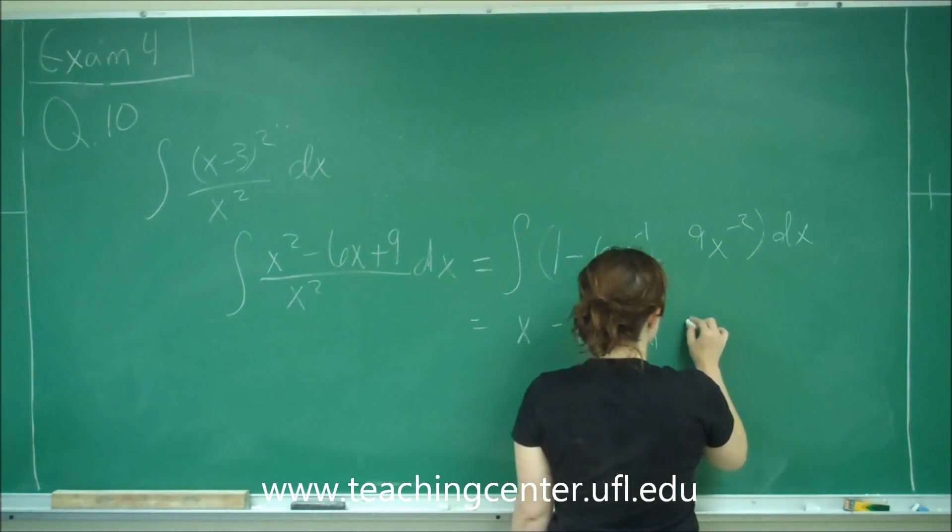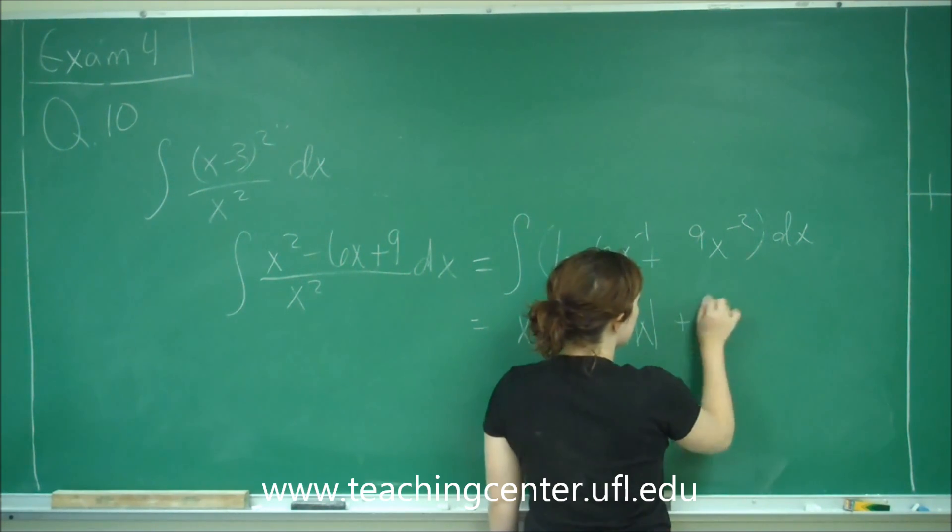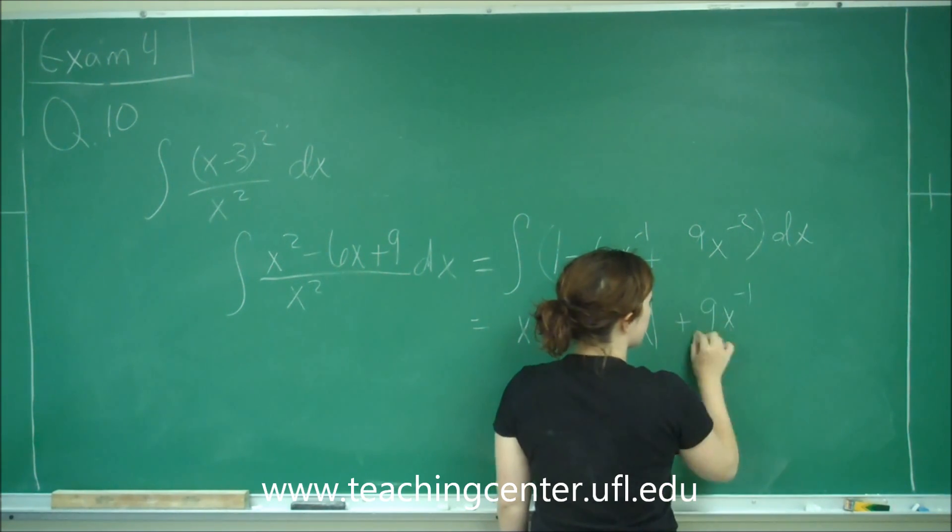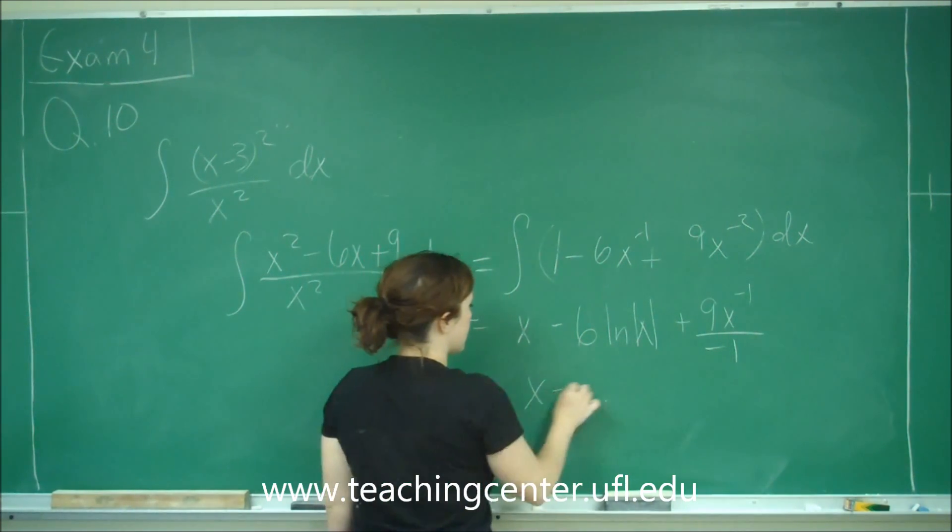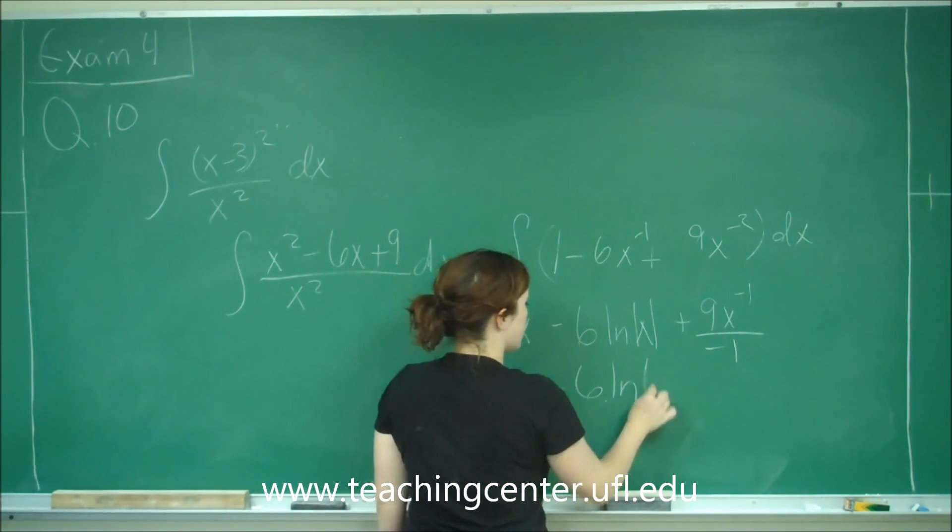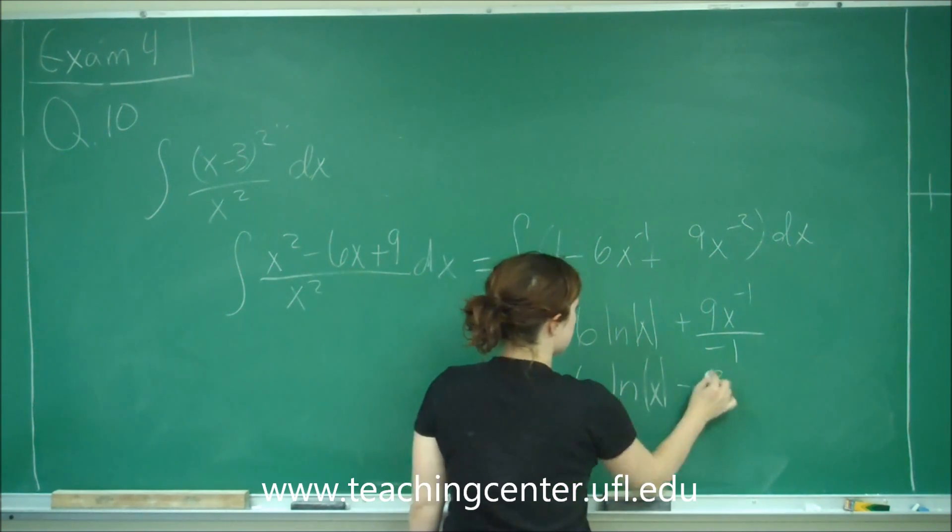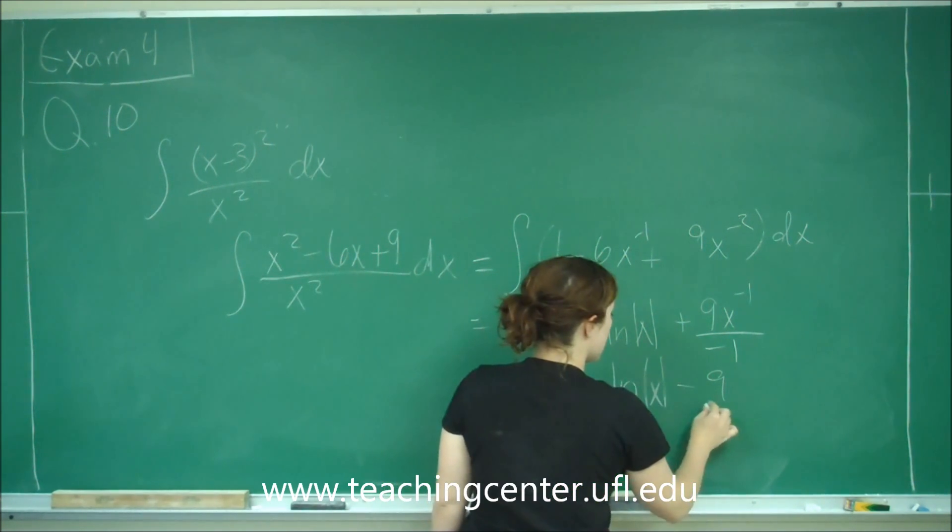And then this will be plus 9x^(-1) over -1. So our answer becomes x - 6ln|x| - 9x^(-1) over x.